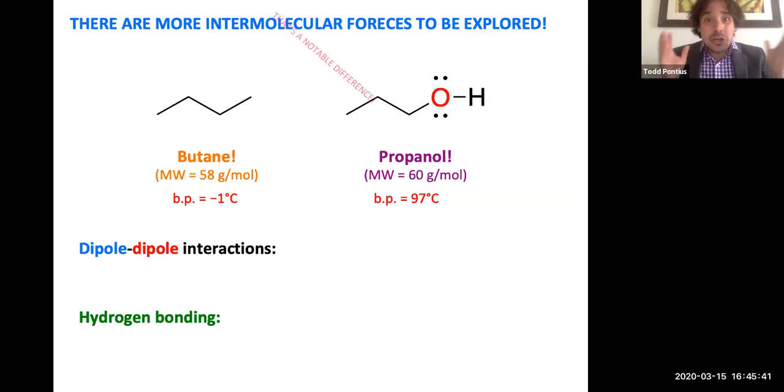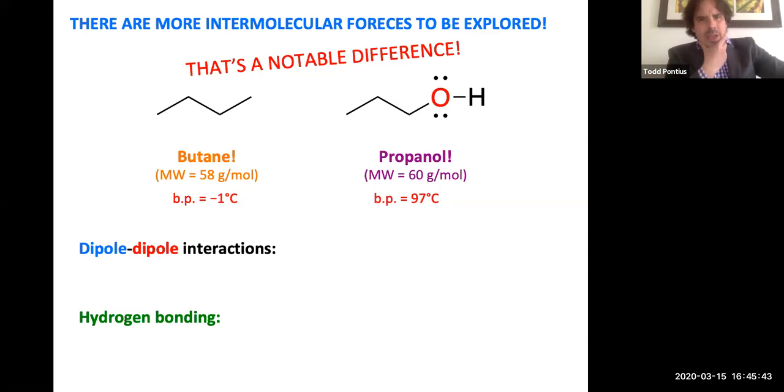What? That's a notable difference. Okay, so what's going on here? Why does butane, which has pretty similar molecular weight, have such a lower boiling point and therefore lower intermolecular forces?